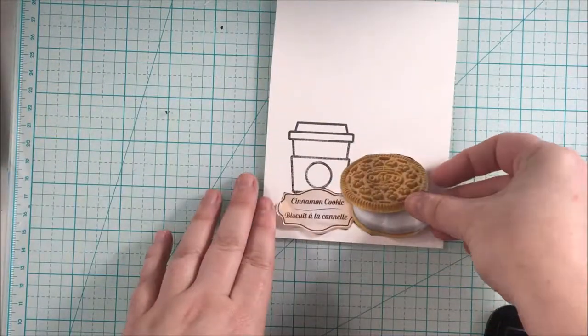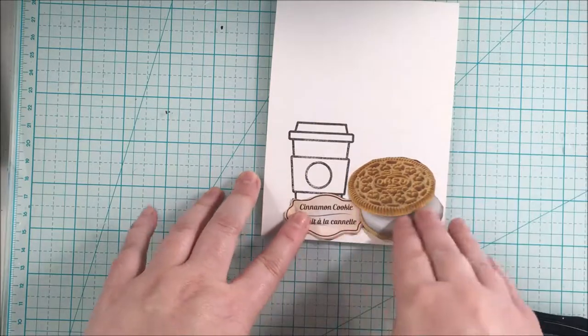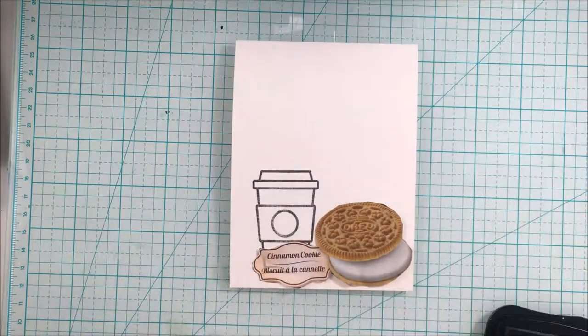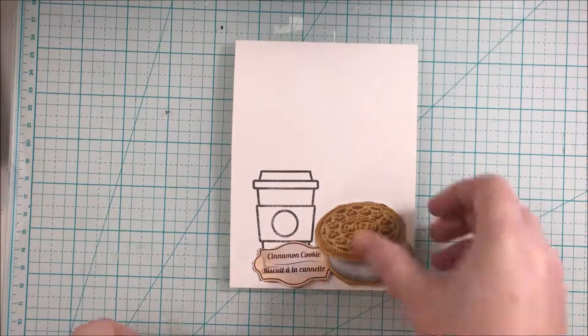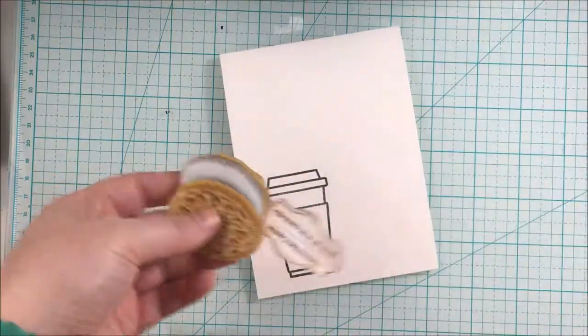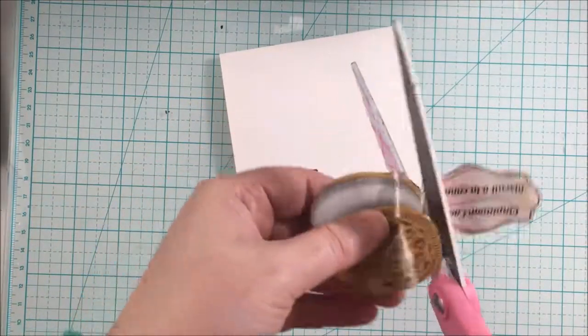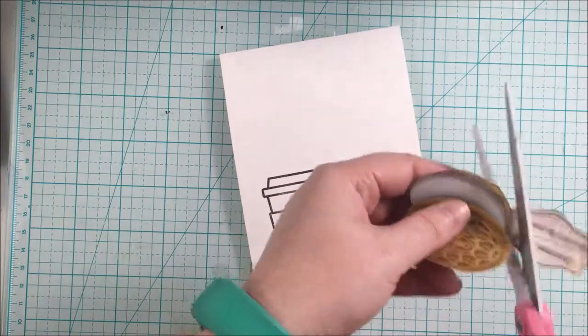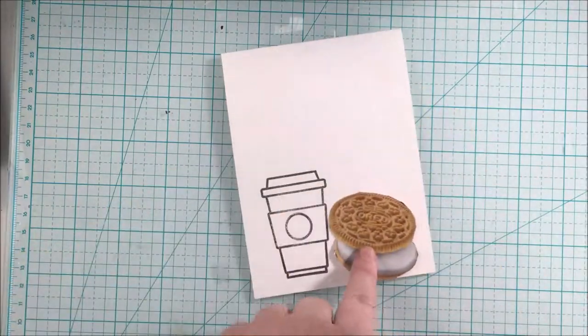At first I wanted to have the coffee cup in behind and have this over top, but then I decided to cut it down and just have the cookie sitting next to the coffee.